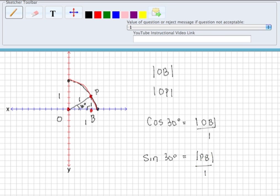Simplifying here, I know that cosine of 30 degrees is equal to √3 over 2. So that means the magnitude of OB is also √3 over 2. Sine of 30 degrees, which is the magnitude of PB, is 1/2.